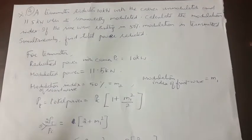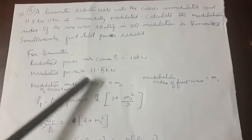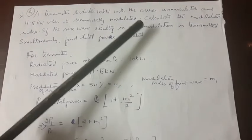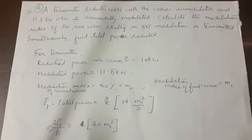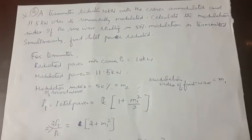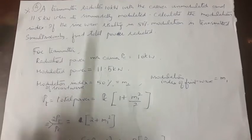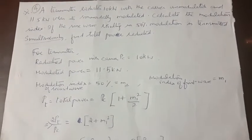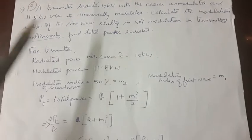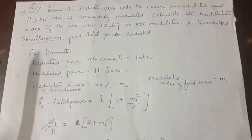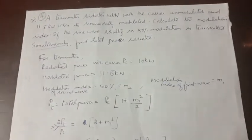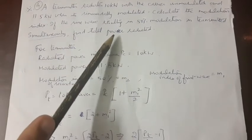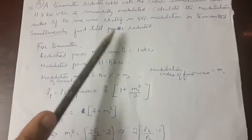Calculate the modulation index if a sine wave resulting in 50% modulation is transmitted simultaneously. The word 'simultaneously' means more than one wave is being transmitted. You need to calculate the modulation index when more than one wave has been transmitted with 50% modulation, and then calculate the total power radiated.